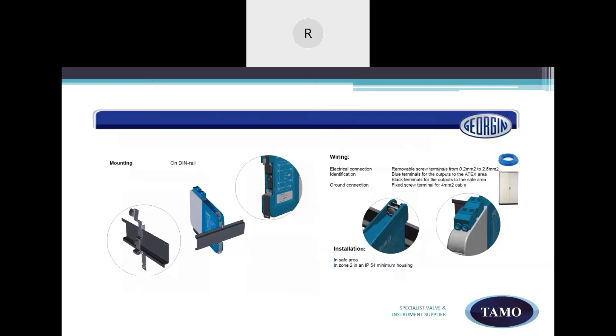Electrical connections have removable screw terminals, 0.2 mm2 to 2.5 mm2, color coded blue terminals for outputs to the ATEX area and black terminals for the outputs to the safe area. The ground connection is a fixed screw terminal for 4 mm2 cable. Just a reminder that the ground terminal must be connected to an equipotential ground network with a wire with 4 mm2 minimum wire selection.